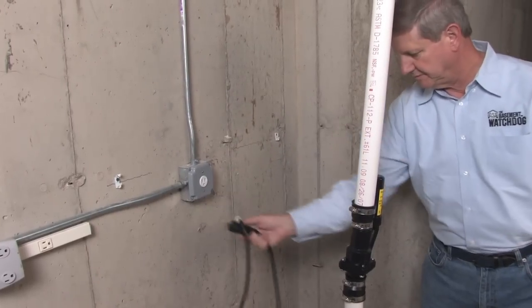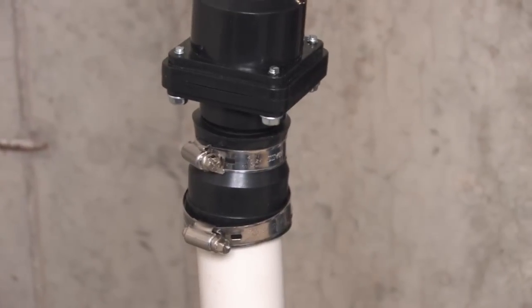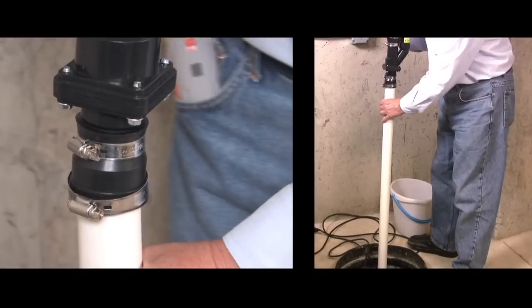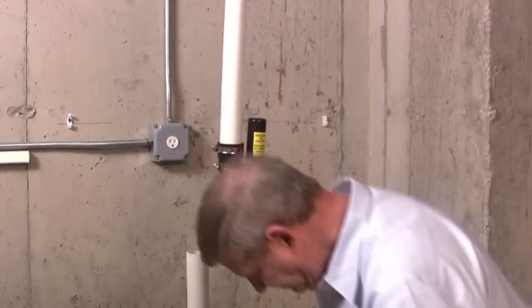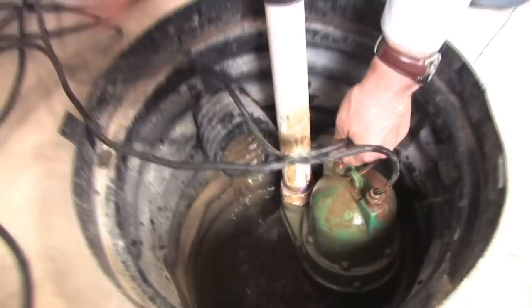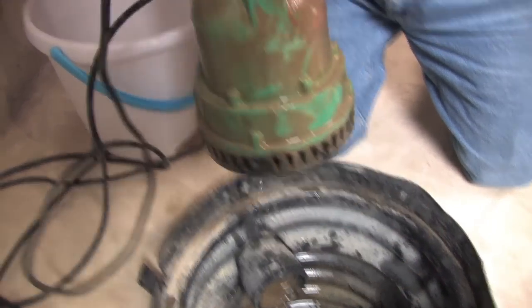Unplug the unit from the wall. Release the pump from the discharge pipe by loosening the hose clamp on the check valve or rubber union. Slowly remove the pump, as there will be water in the pipe above the check valve. Then remove the pump and pipe from the sump pit and place it in a bucket to contain any water left in the pump.